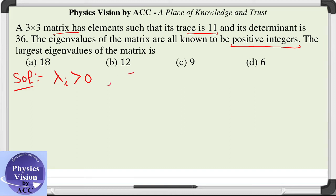Second property is the sum of the eigenvalues is its trace, so that is given to be 11. And the third property is the product of the eigenvalues is 36, which is the determinant of the matrix.